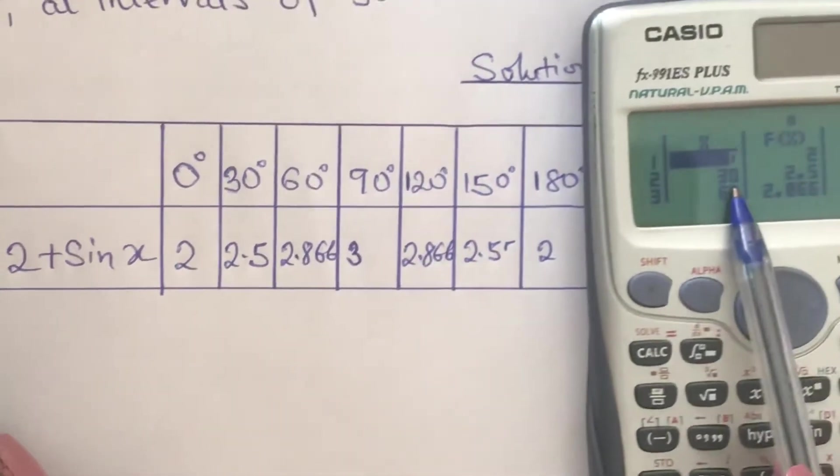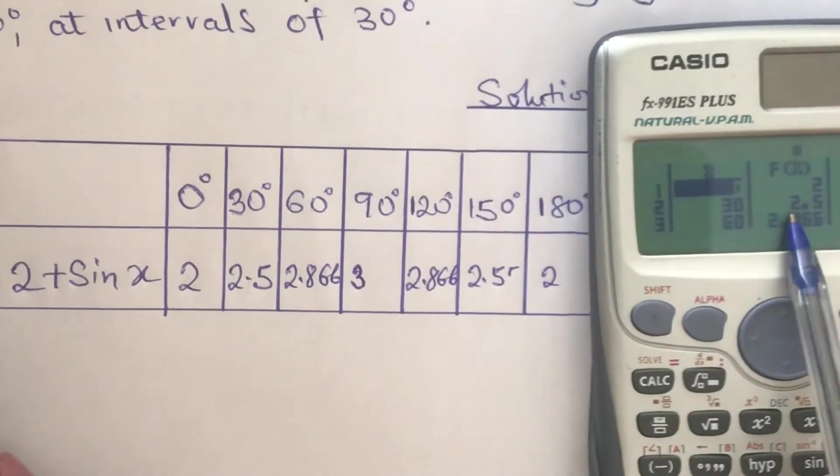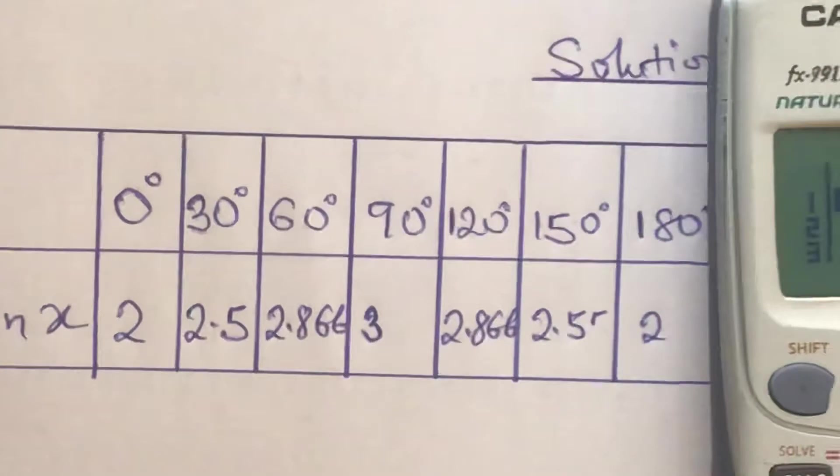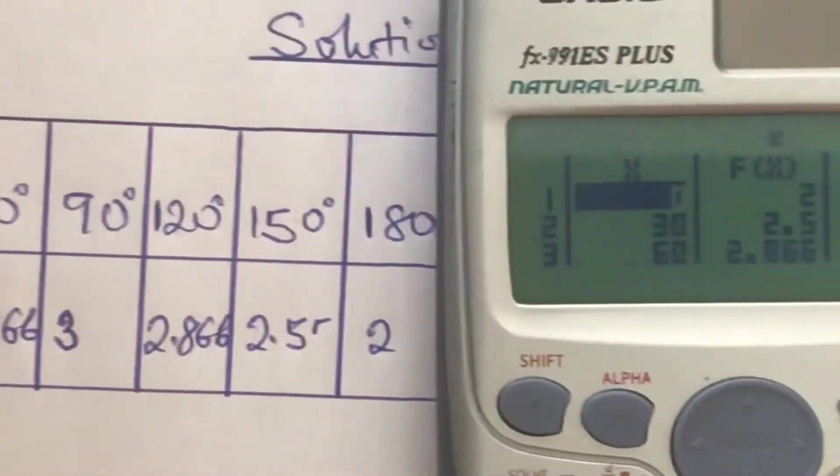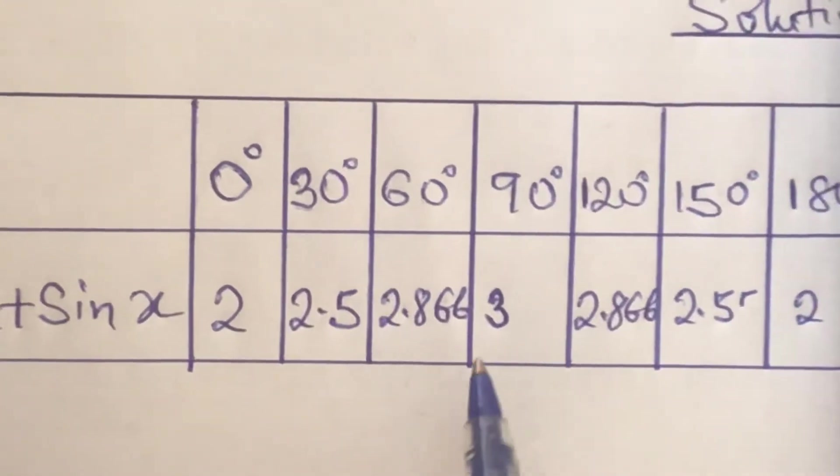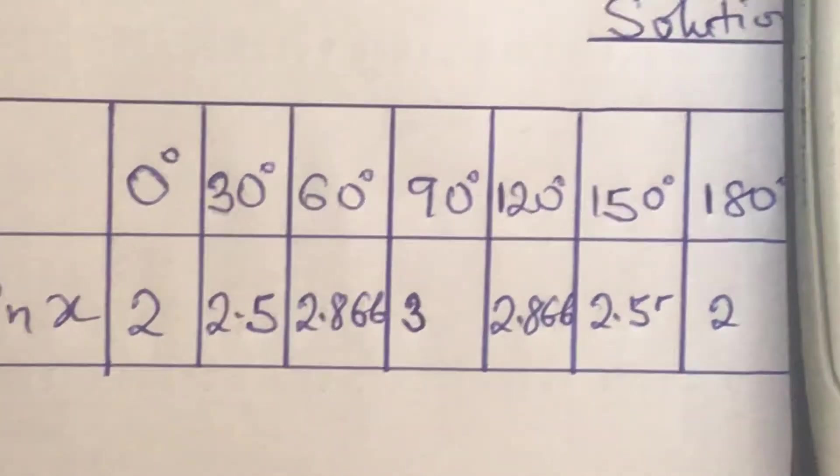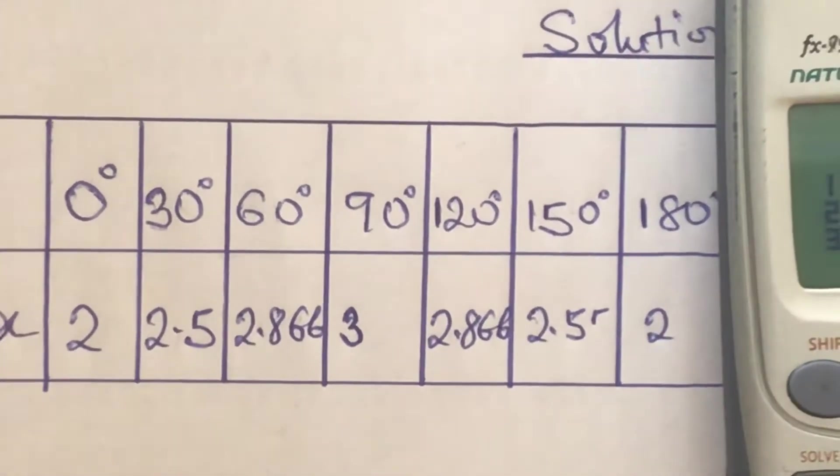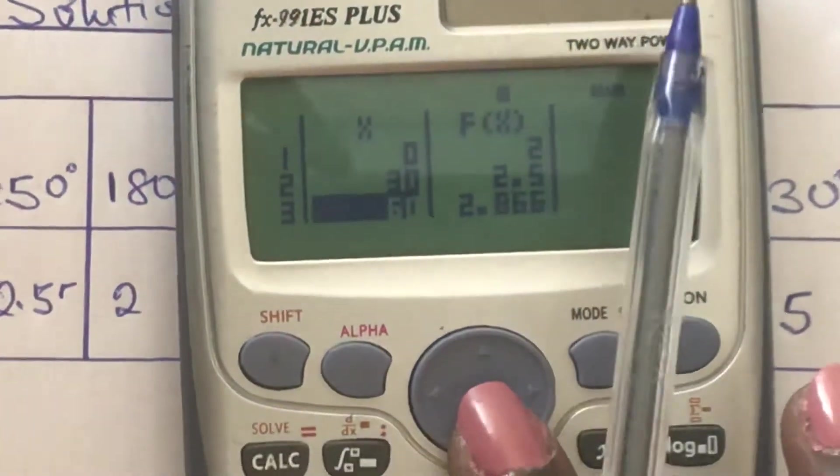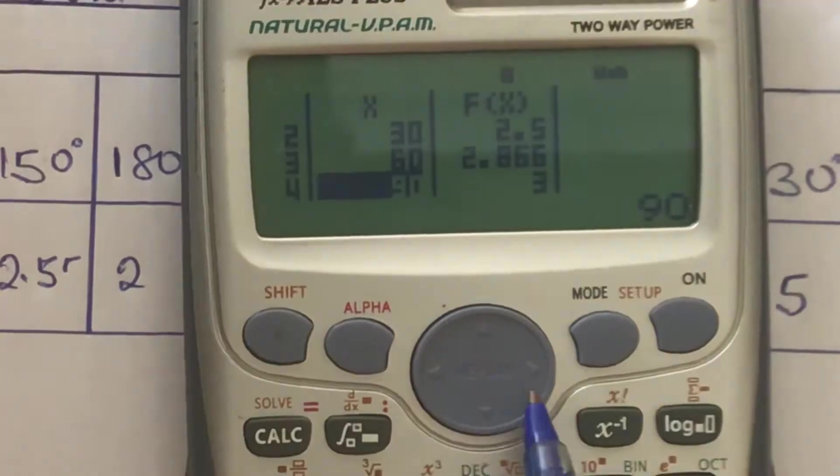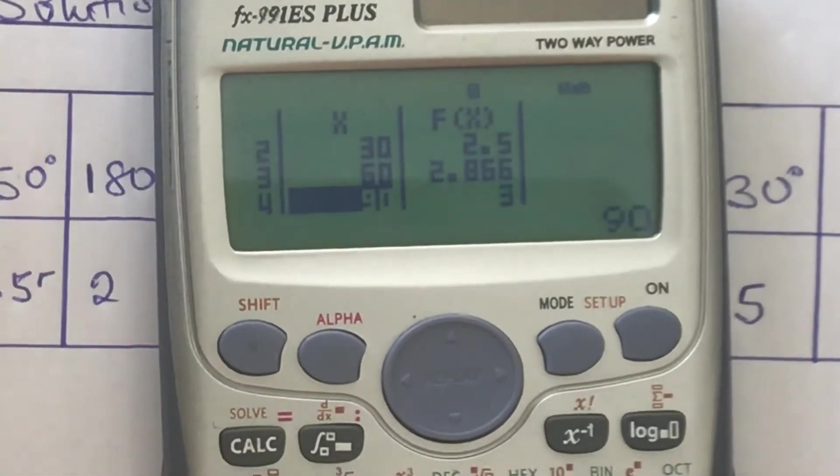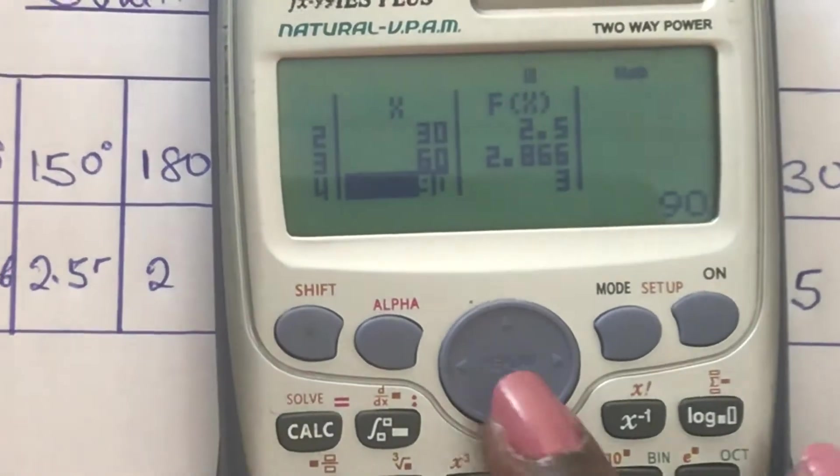What value did we get for the 30 degrees? We have 2.5. What value did we get for the 60 degrees? We have 2.866. That is what is reflecting over there. Then the 90 degrees, let's go down. Use the arrow going down to see the values down there.